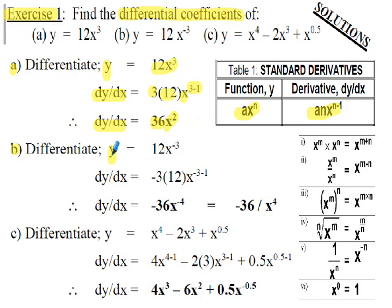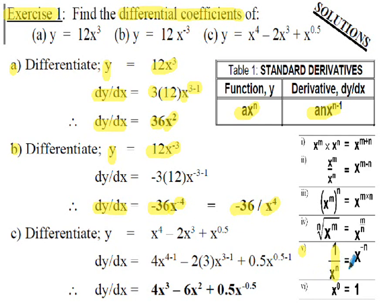Part b: differentiate y = 12x^(−3). Here a=12, x=x, and n=−3. Following the pattern: −3×12=−36 and x^(−3−1)=x^(−4), so dy/dx = −36x^(−4). I've also shown this as −36/x⁴, using the indices rule that x^(−n) = 1/x^n. We'll be using indices in many of these questions to simplify either the initial expression or the final answer.